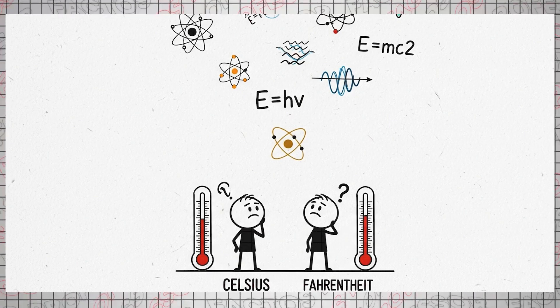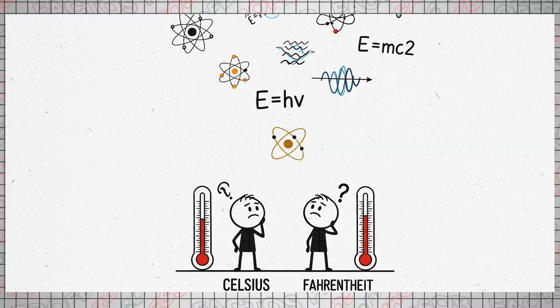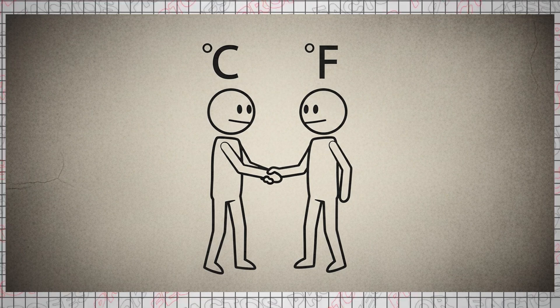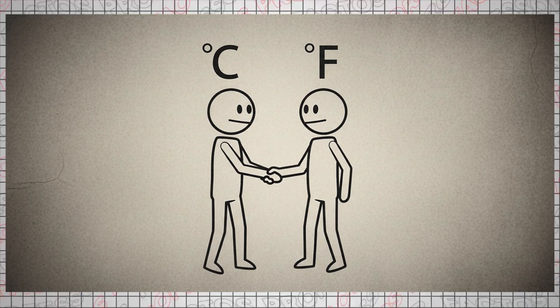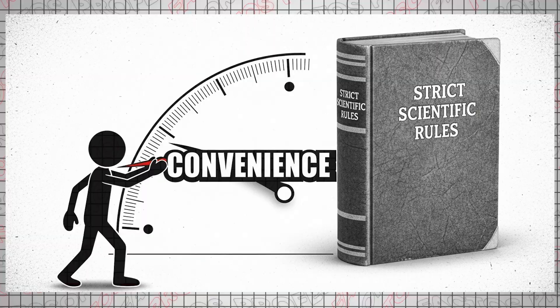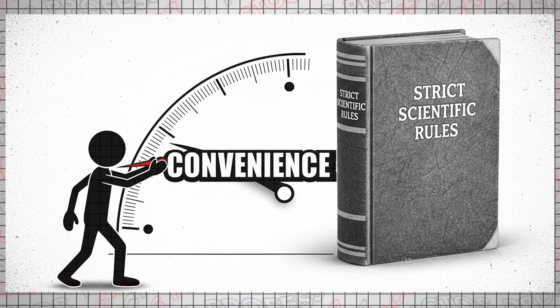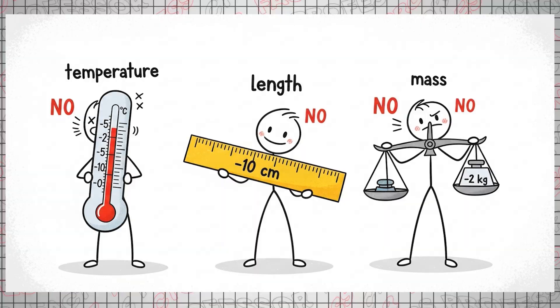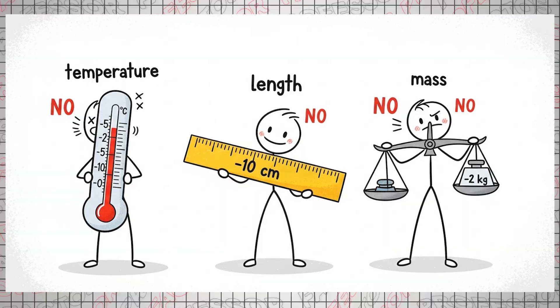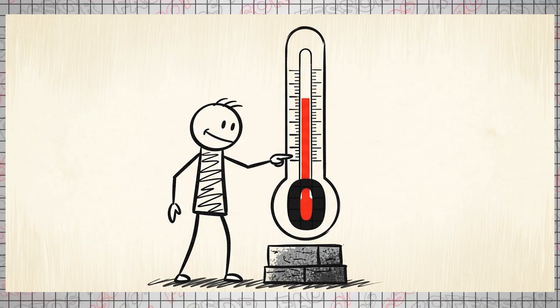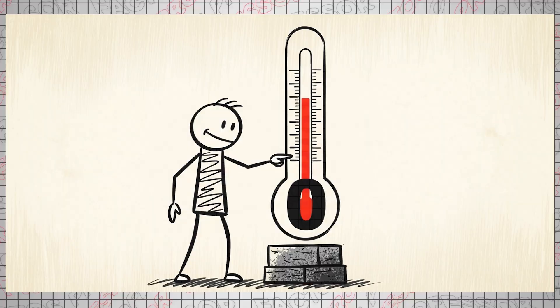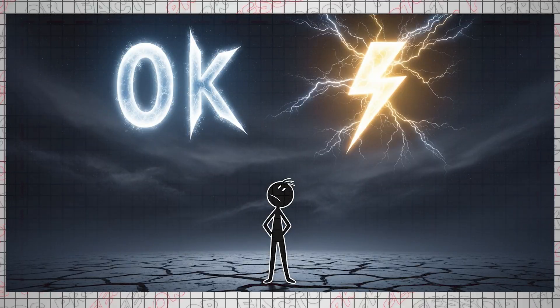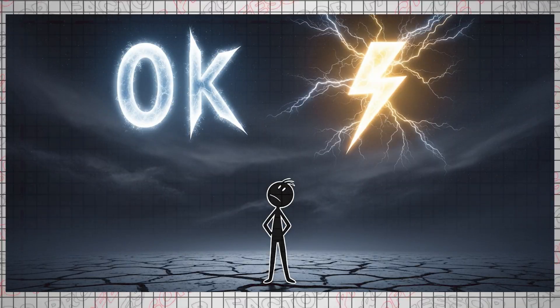However, both of these temperature scales share a fundamental flaw. They are too far removed from the scientific definitions of temperature we discussed earlier. Both the Celsius and Fahrenheit temperature values are conventional, meaning they are set for convenience rather than adhering to strict scientific rules. From a scientific perspective, temperature, much like length or mass, should not have negative values. The lowest possible temperature can only be zero.